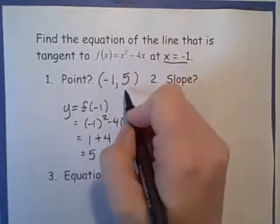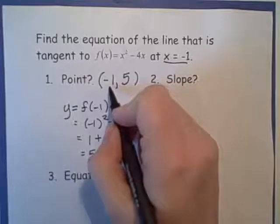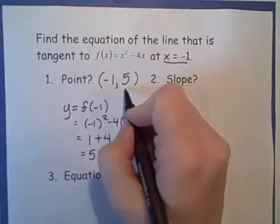So the y value of the point is 5. Our line goes through negative 1, 5.